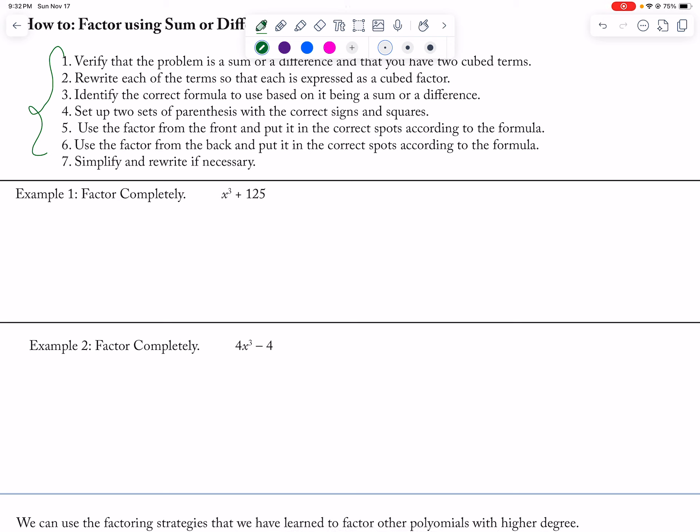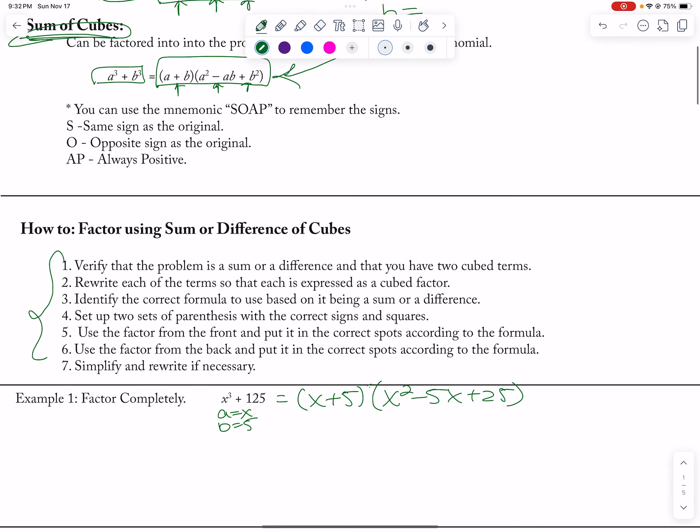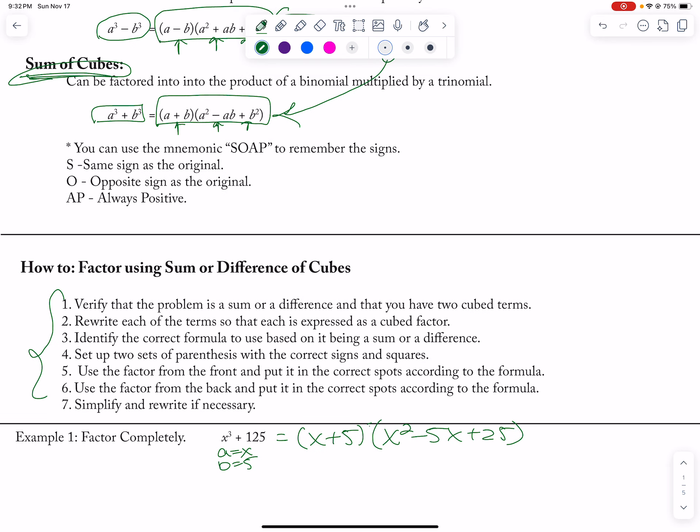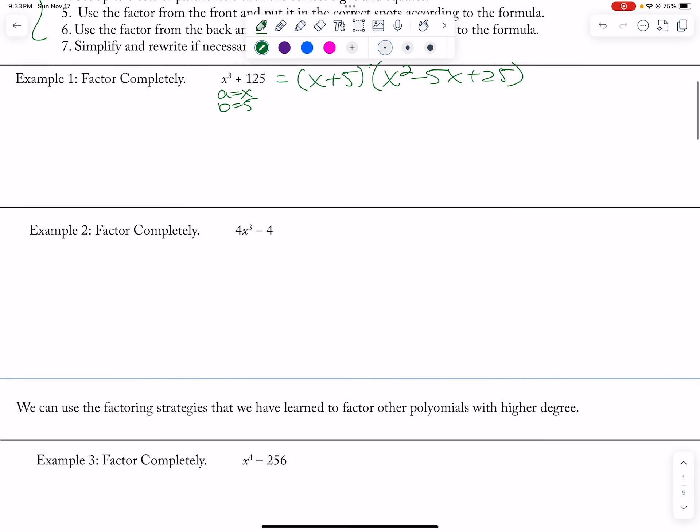So what is my A? My A is equal to X and my B is equal to 5. So when I plug this into the formula, I'm going to get an X plus 5, X squared minus 5X plus 25. And all I did was basically just plug this in to this formula here. A plus B, A squared minus AB plus B squared.